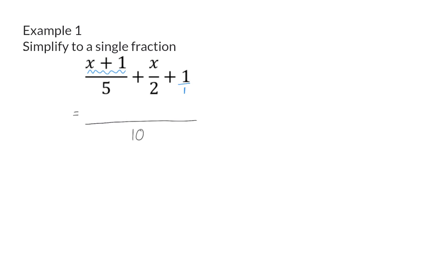For the first fraction, it is important to realize that everything in the numerator should now be multiplied by 2. For safety, I'm going to write 2 times (x+1). The second fraction needs to be multiplied by 5, so the numerator will be 5x, and the third fraction should be multiplied by 10.